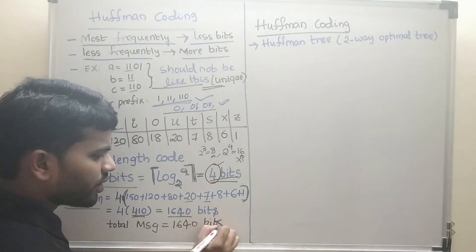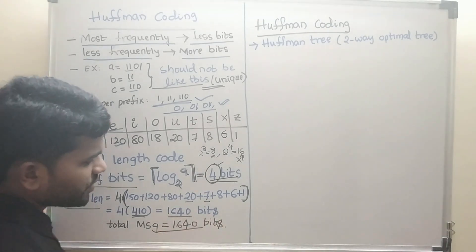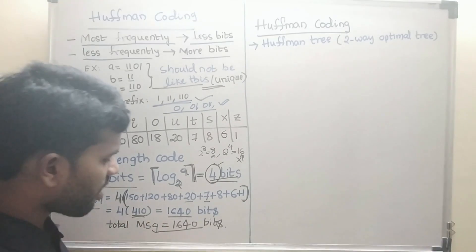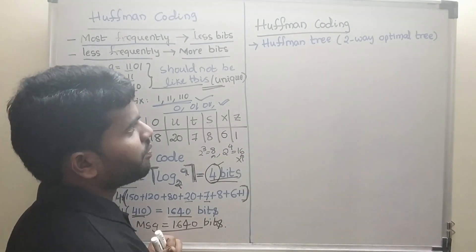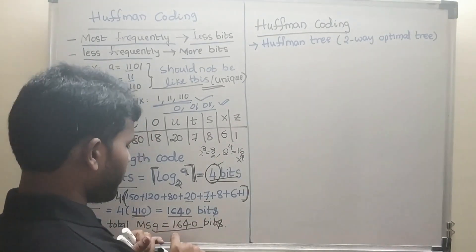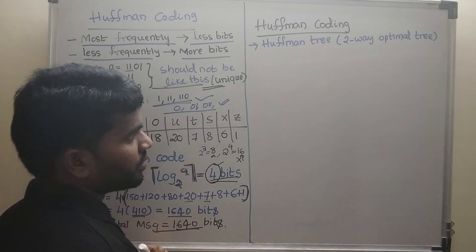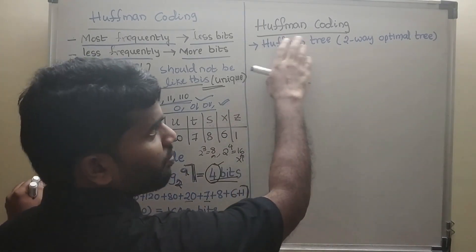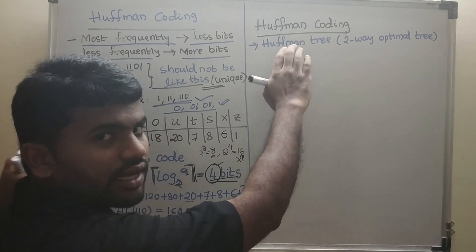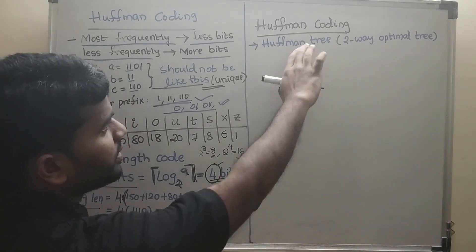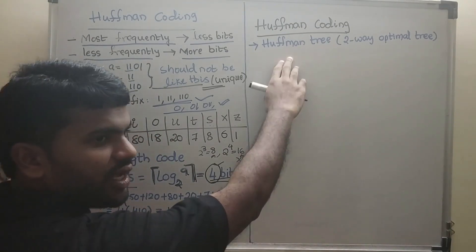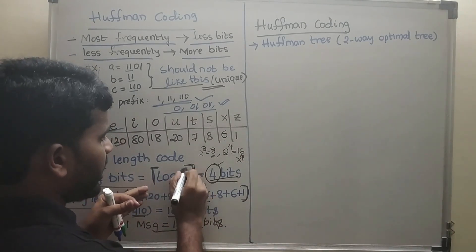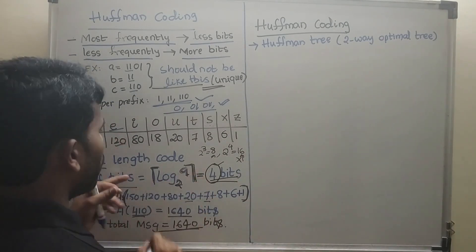Our aim is to reduce the memory size. By using Huffman coding we will reduce the memory size, meaning we will decrease the number of bits. In Huffman coding, we will construct a tree and from that we will assign bits and calculate the total number of bits.